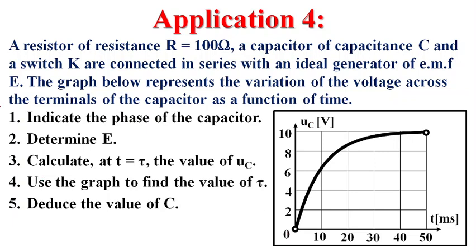Application 4: A resistor of resistance R equal to 100 ohms, a capacitor of capacitance C, and a switch K are connected in series with an ideal generator of EMF E. The graph below represents the variation of the voltage across the terminals of the capacitor as a function of time. Part 1: Indicate the phase of the capacitor. We have two phases: charging and discharging. By referring to the shape of the figure, the capacitor undergoes charging since UC increases exponentially with respect to time. Determine E. At the end of the charging process, UC equals E. Therefore, E equals UC max, which is 10 volts.